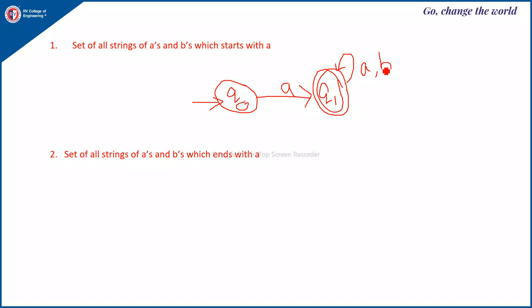You can take this NFA and construct an equivalent DFA using the subset construction method or lazy evaluation method and check whether it accepts the same language. Next is all strings of A's and B's which ends with A — put a self loop on the start state instead of going directly to the final state.